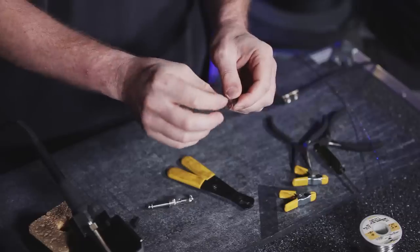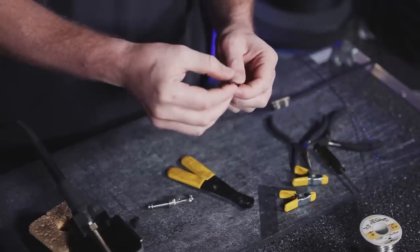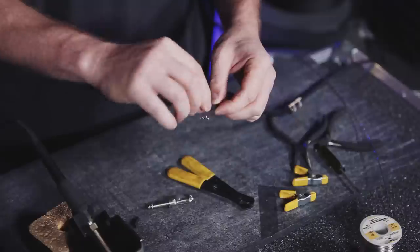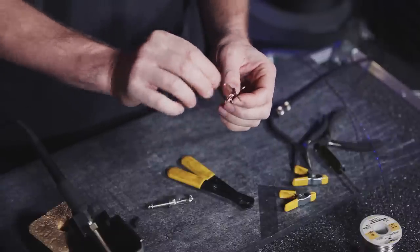Pull the strands of the ground or the shield away so that you can twist them into their own conductor to be soldered onto the connector.